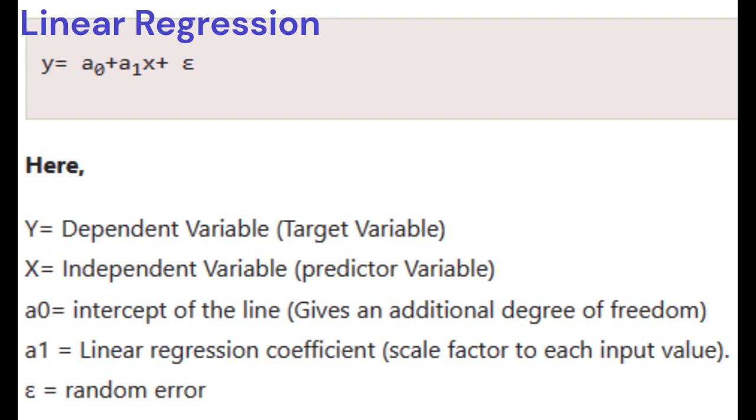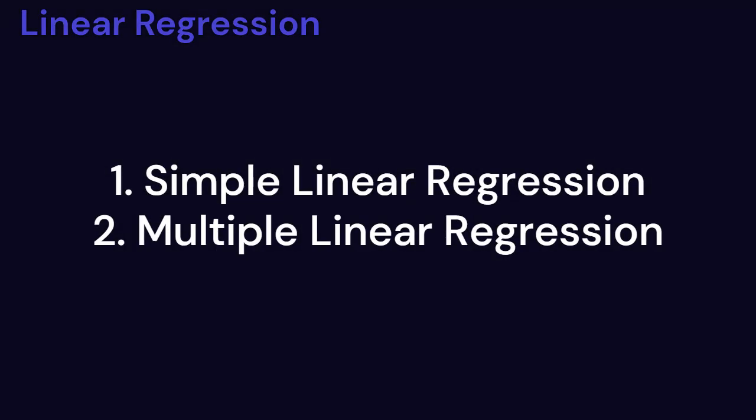Linear regression can be further divided into two types of the algorithm. Simple linear regression: If a single independent variable is used to predict the value of a numerical dependent variable, then such a linear regression algorithm is called simple linear regression.